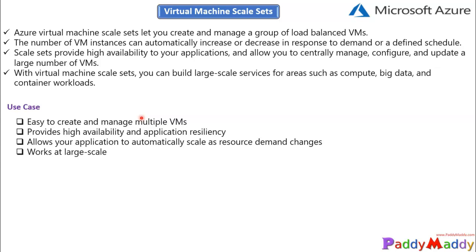You can also use scale sets with a load balancer or even an application gateway. As discussed in the networking section, the application gateway works for layer 7 traffic distribution along with TLS termination, while the load balancer handles layer 4 traffic. Both can be integrated within the scale set. You have a public IP on the front end and the scale set on the back end, so if one virtual machine is overloaded, it automatically spins up additional instances to take the load.